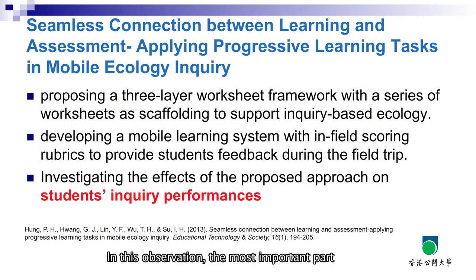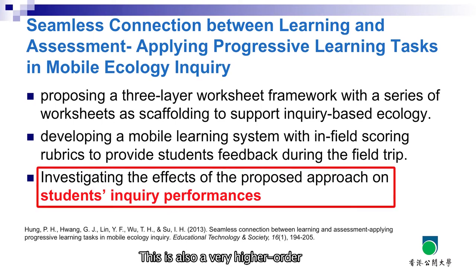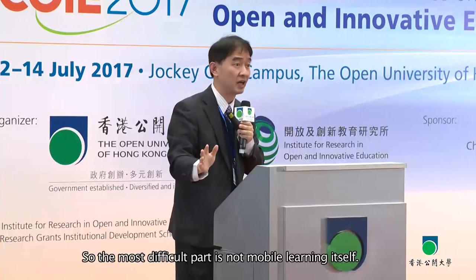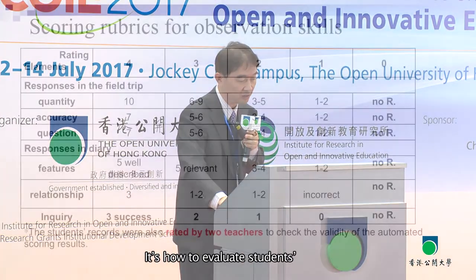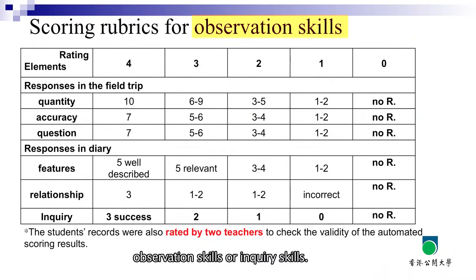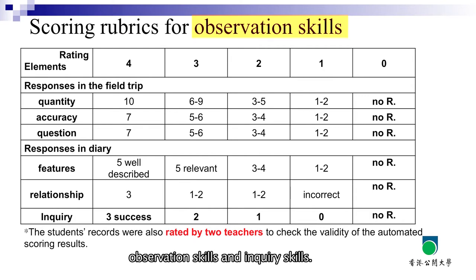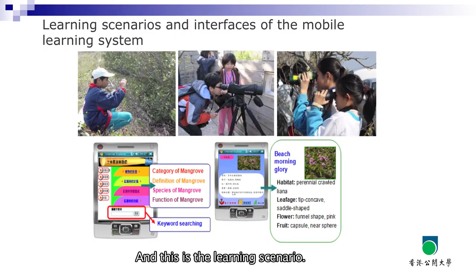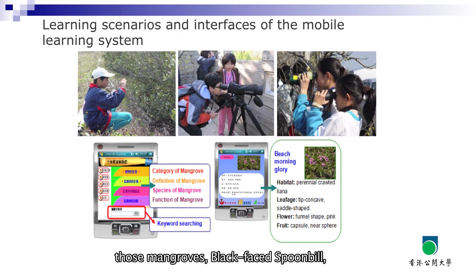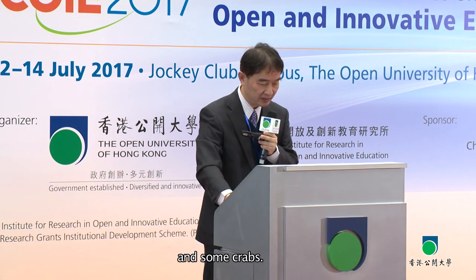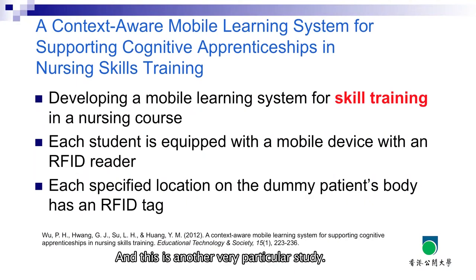In another application, the most important part is evaluating students' inquiry performance — a very high-order thinking skill. The most difficult part is not mobile learning itself but how to evaluate students' observation and inquiry skills. We cooperated with experts to design rubrics for evaluating these skills. Students need to make observations and collect data in the field to observe mangroves and other specimens. We also applied this to nursing skill training, which is a seldom-applied domain.